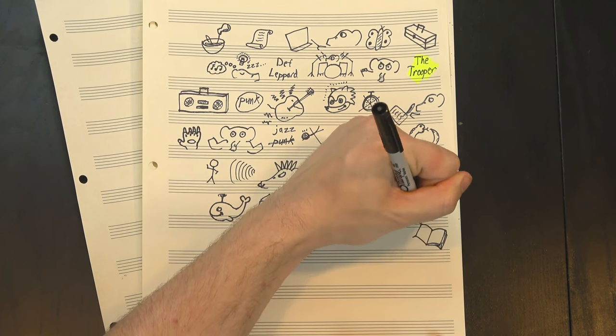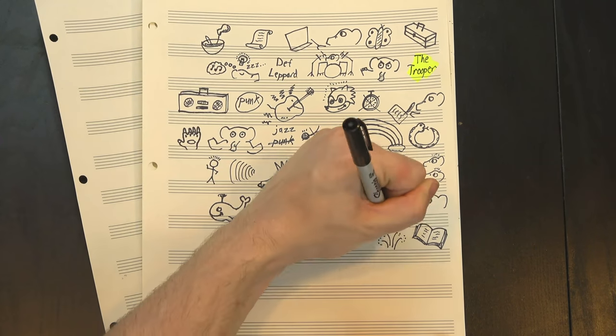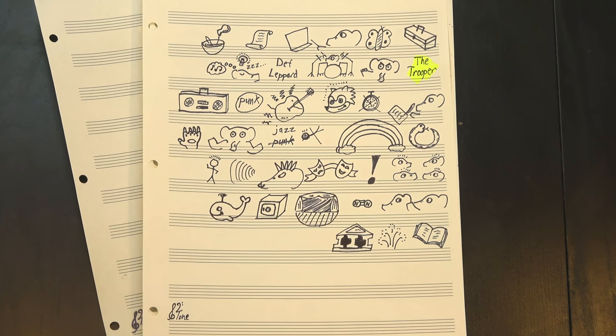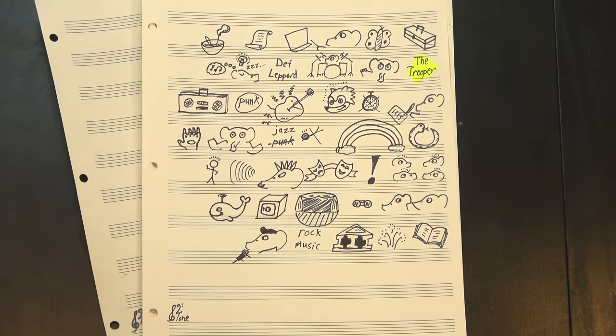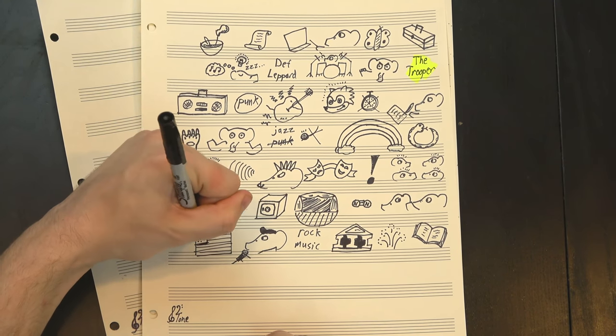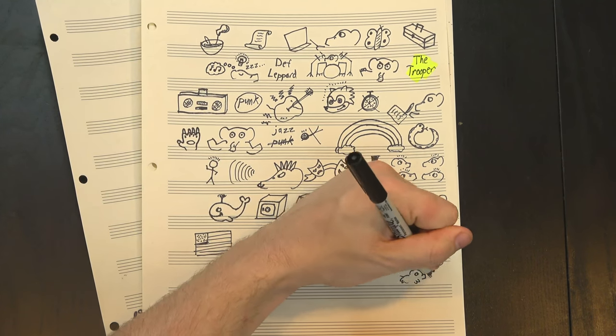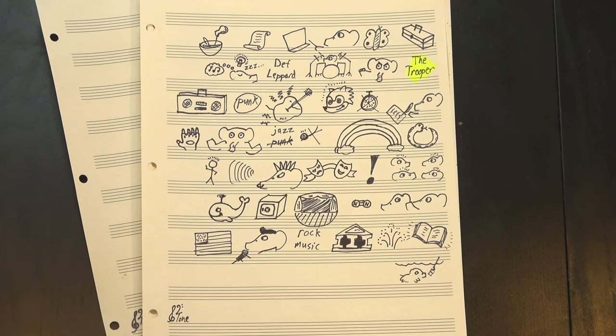And finally, a genre is also a set of stories, people, and events. That is, it's a history. Rock music, for instance, is Elvis Presley, it's Jimi Hendrix's performance of the Star-Spangled Banner, and it's the rise of grunge in the 90s. These are all a part of the story of rock.